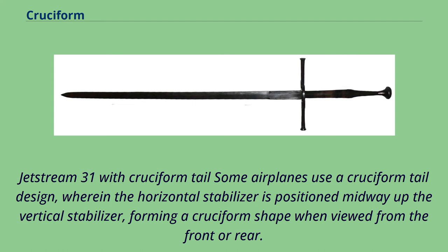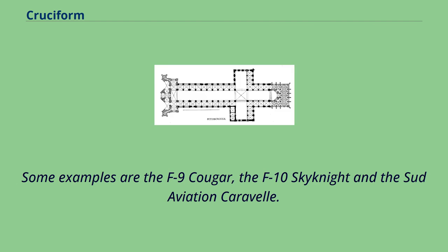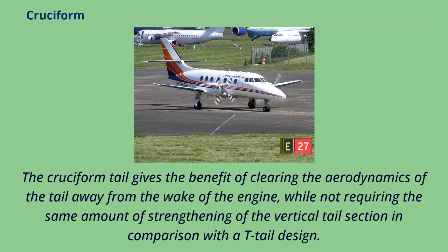Jetstream 31 with cruciform tail. Some airplanes use a cruciform tail design, wherein the horizontal stabilizer is positioned midway up the vertical stabilizer, forming a cruciform shape when viewed from the front or rear. Some examples are the F-9 Cougar, the F-10 Skynight, and the Sud Aviation Caravelle. The cruciform tail gives the benefit of clearing the aerodynamics of the tail away from the wake of the engine, while not requiring the same amount of strengthening of the vertical tail section in comparison with the T-tail design.